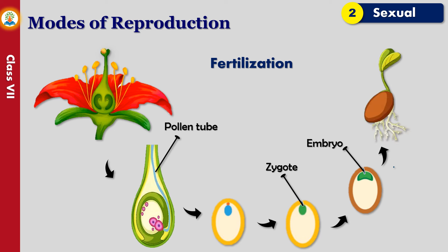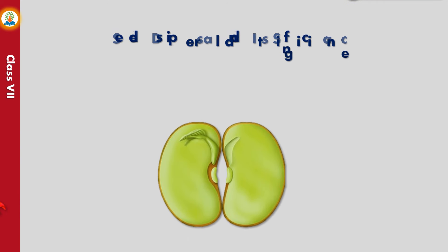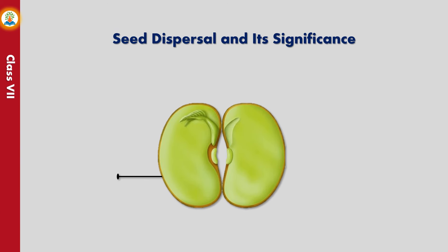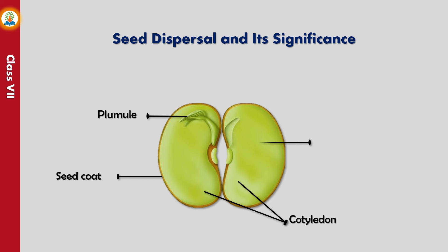After zygote formation, the parts of the flower shed off after drying. The ovary persists and ripens to form the fruit. The zygote within the ovule starts dividing and growing and forms an embryo. Thus, the seed containing a young plant in the form of an embryo is formed. A seed has a hard outer covering called the seed coat, an embryo, and the embryo has one or two cotyledons with food material and an embryonal axis. The embryonal axis has two parts: the plumule that gives rise to the shoot system, and the radicle that gives rise to the root system.